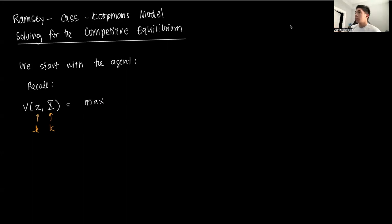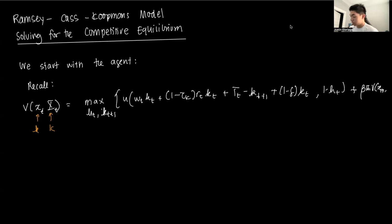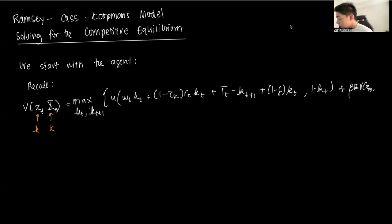In recursive form, we have the Bellman: V(k_t, K_t) = U(C_t, 1 - H_t) + β·E[V(x_{t+1}, X_{t+1})], where consumption C_t = W_t·H_t + (1 - τ_K)·R_t·k_t + T_t - [k_{t+1} - (1-δ)k_t]. Note that this entire expression in the first argument is just C_t, and the second argument is (1 - H_t), so the utility is U(C_t, 1 - H_t). That's our Bellman equation.